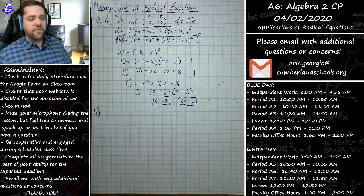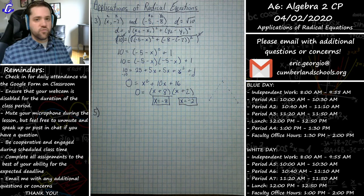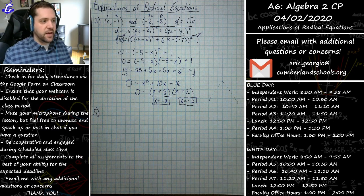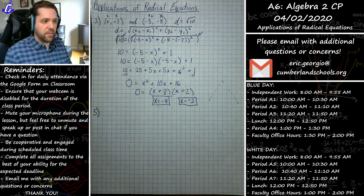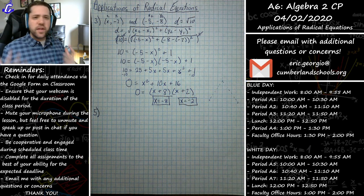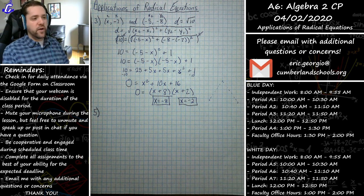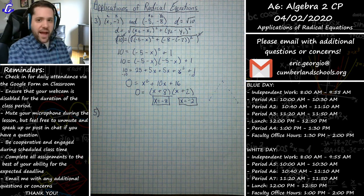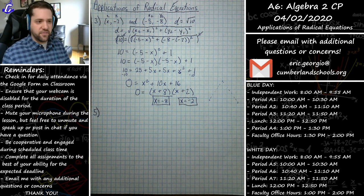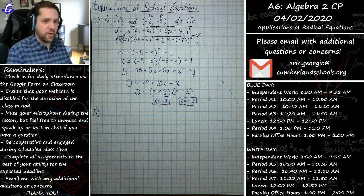Not every problem will revisit geometry — you may also see random physics formulas show up. For example, problem number five comes from meteorology, good old weather forecasting. You don't need to know the background or derivation of the formula; we're only concerned with how to algebraically use it to find what we need.